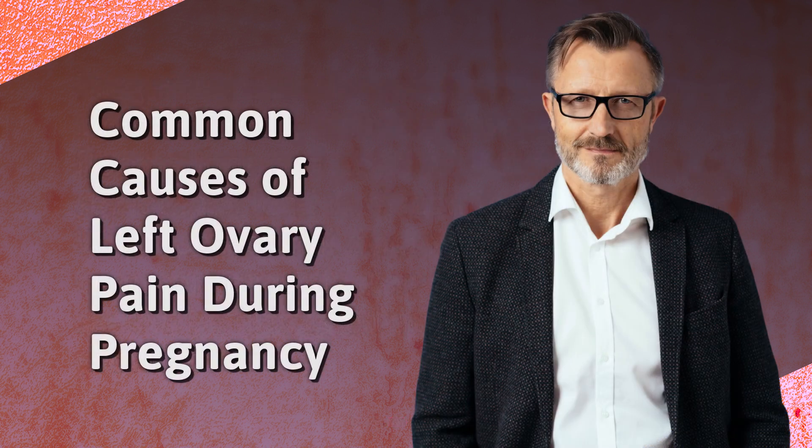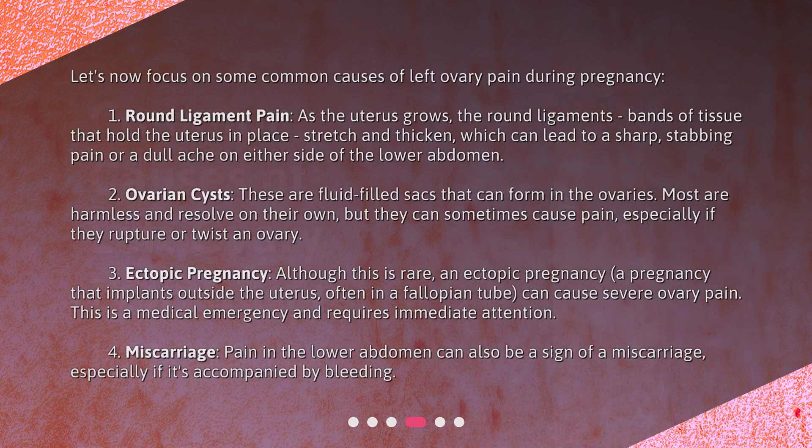Let's now focus on some common causes of left ovary pain during pregnancy. 1. Round Ligament Pain: As the uterus grows, the round ligaments — bands of tissue that hold the uterus in place — stretch and thicken, which can lead to a sharp, stabbing pain or a dull ache on either side of the lower abdomen.